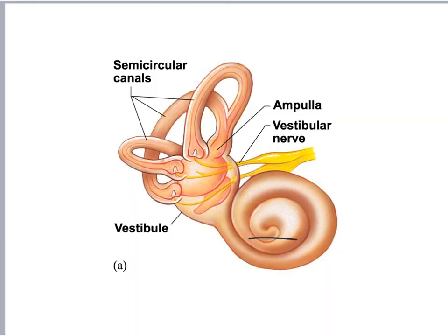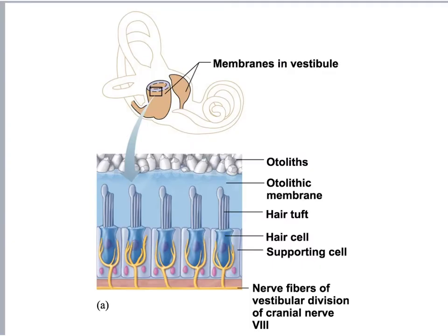Here's what the inner ear looks like: you have your semicircular canals, the vestibule, and the cochlea. You can see the vestibular nerve coming out, forming these little triangular structures — we call these the cupula. Looking at the membranes in the vestibule, you can see supporting cells with ciliated hairs surrounded by fluid in an otolithic membrane that holds them in place. Nerve fibers relay the message to the vestibular division of the cranial nerve, which is important for balance.